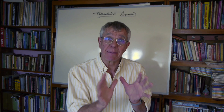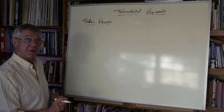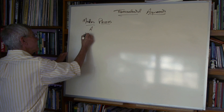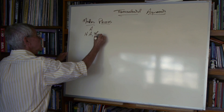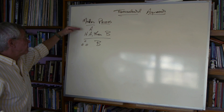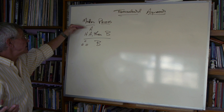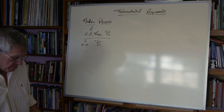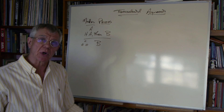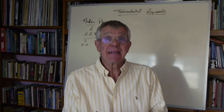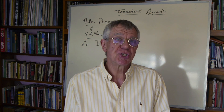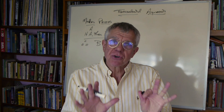Let's write that out in a more precise and abstract form. The general structure of modus ponens: we have some sentence A, and then we have the claim if A then B, and we conclude therefore B. For example: if it's sunny out, the streets aren't wet; it is sunny out, so the streets aren't wet. Or: if Socrates is a man, then Socrates is mortal; Socrates is a man, therefore Socrates is mortal.